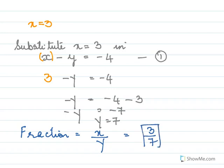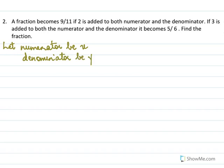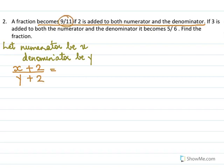Here again we are dealing with fractions. Let numerator be x and denominator be y. A fraction becomes 9 by 11 if 2 is added to both the numerator and the denominator, so we have (x plus 2) over (y plus 2) equal to 9 over 11.